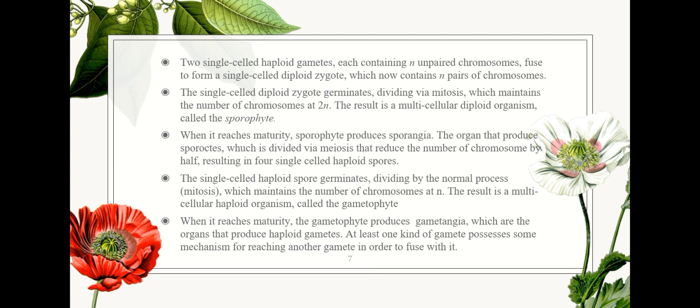Third, when it reaches maturity, the sporophyte produces sporangia — the organ that produces spores — which are divided by meiosis that reduces the number of chromosomes by half, resulting in single-celled haploid spores. Fourth, the single-celled haploid spores germinate, dividing by the normal process of mitosis, maintaining the number of chromosomes at N. The result is a multicellular haploid organism called the gametophyte. And lastly, when it reaches maturity, the gametophyte produces gametangia, which are the organs that produce haploid gametes. At least one kind of gamete possesses some mechanism for reaching another gamete in order to fuse with it.